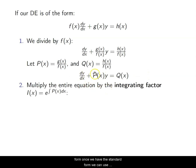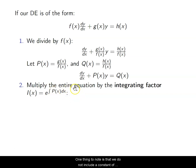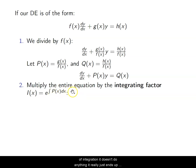Once we have the standard form, we can use this P(X) function in what we call the integrating factor. The integrating factor is E raised to the power of the integral of P(X) with respect to X. One important note: we do not include a constant of integration here. It's not necessary — it would just turn into a constant multiple and cancel out anyway.